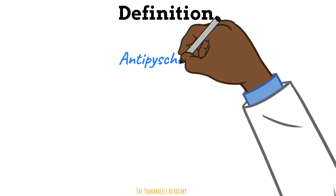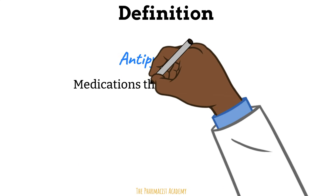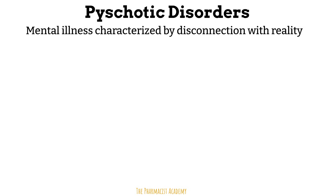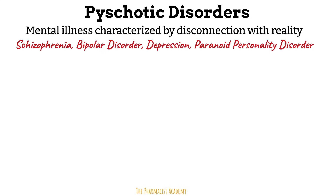By definition, antipsychotics refer to drugs that we use to treat psychotic disorders. A psychotic disorder is a disease that affects the brain, causing a person to lose touch with reality and have abnormal perceptions and thinking. This is sometimes referred to as psychosis and is seen in the following disease states: schizophrenia, the more common one, but it may also be seen in bipolar disorder, depression, and paranoid personality disorder.